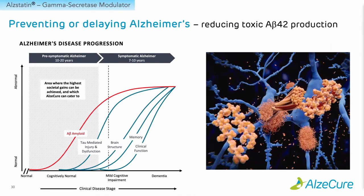If we look at A-beta amyloid, this is a really early finding in disease, as can be seen on the graph to the left. Shown in red is the accumulation of A-beta amyloid in the brain, and this starts some 15 to 20 years before symptom onset. It's obviously something you would want to affect very early on to avoid secondary and tertiary effects.